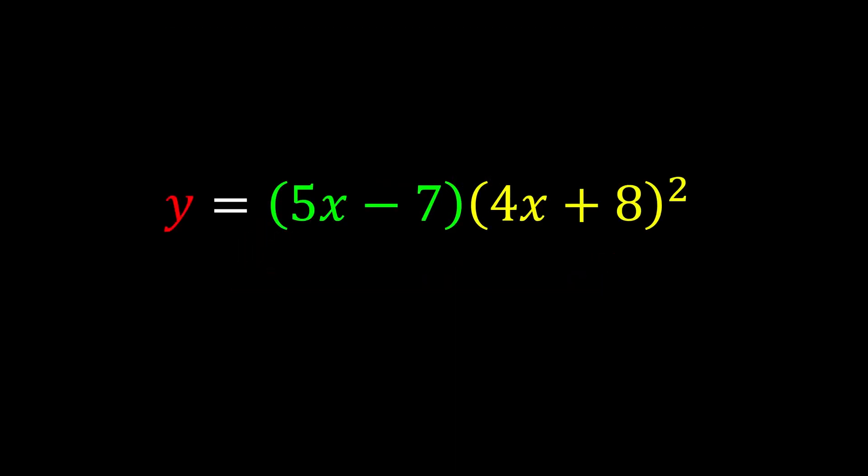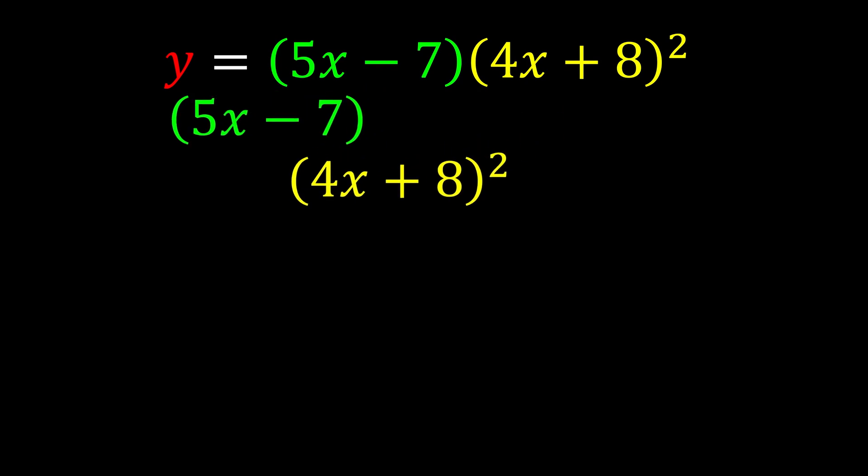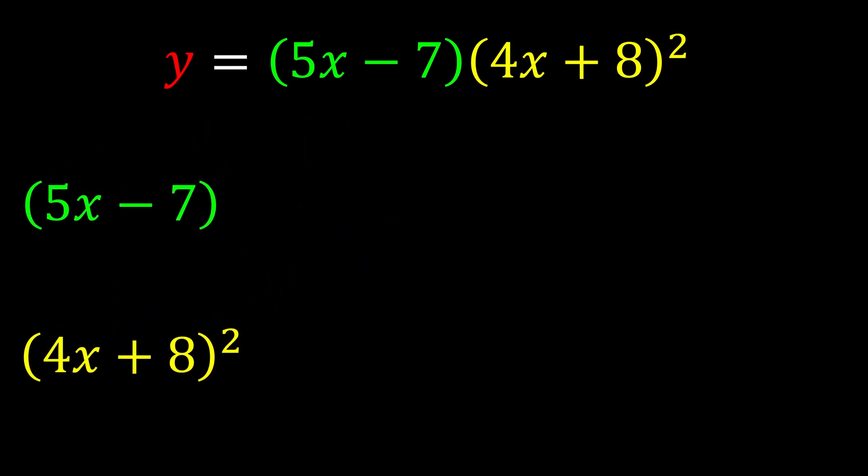Let us see how we can use the product rule and apply it to this question. We're going to put the original functions on the side first, and then write down their differentiations. 5x - 7, if we take the differentiation, we get 5.